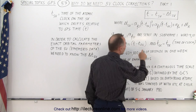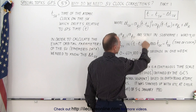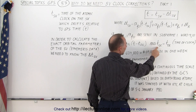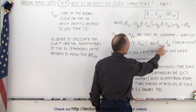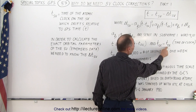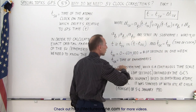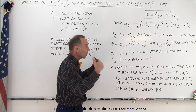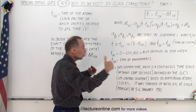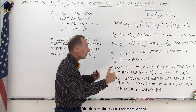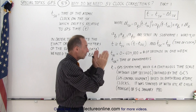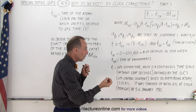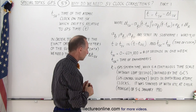We're also going to do a check on the time of the clock: we want to make sure that the toc matches up with the toe — the time of ephemeris — to make sure we're using the right value for toc. In the next video we'll give you more of an idea why we do that.